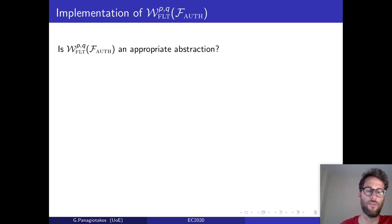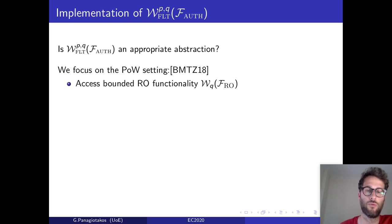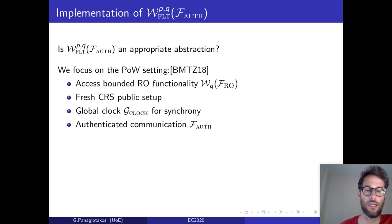Next, to see if the filtered network functionality is an appropriate abstraction of real models, we implement it in the proof-of-work setting of Badertscher, Maurer, Tschudi and Zikas. Assuming an access-bounded random oracle functionality, a fresh CRS, a global clock used for synchrony, and authenticated communication channels, we implement the filtered network functionality in the UC framework.